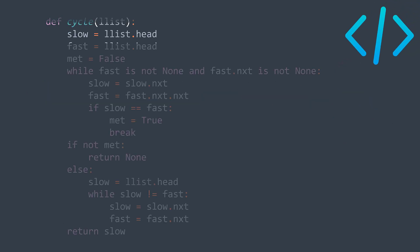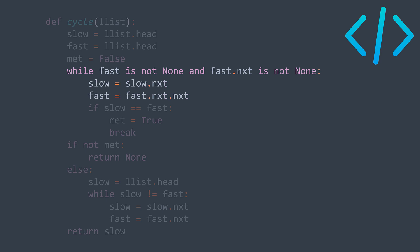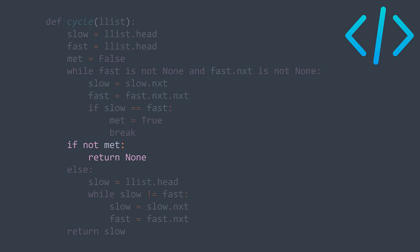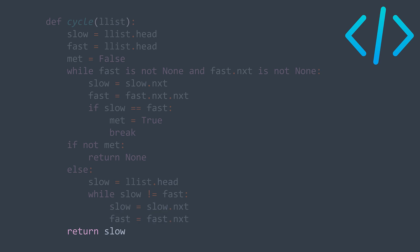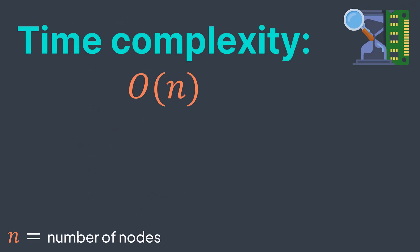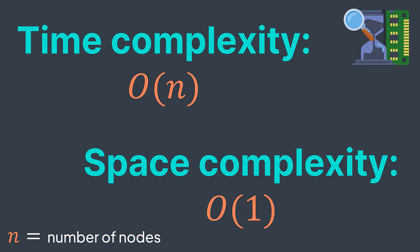In code, we put two pointers slow and fast on the head, and a boolean set to true if they meet. While fast still has at least one node after it, we move slow forward by one node (slow = slow.next) and fast by two nodes (fast = fast.next.next). If they meet, we set met to true and break the loop. After the loop, if they didn't meet, there is no cycle and we return null. Otherwise, we take slow back to the head, then while slow and fast haven't met, we move them both by one node. After they meet, we return one of them as it's the start node of the cycle. Time complexity is O(n) and space complexity is O(1), since we only use two node variables.